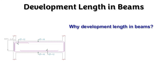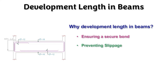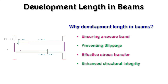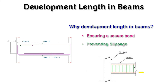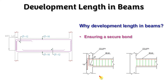Now we know what development length is. Let's look at why we need to provide it. It ensures a secure bond and prevents slippage, provides effective stress transfer, and enhances structural integrity. If we don't provide the development length, when load is applied on the beam it tends to pull the bar, and the reinforcement can simply slip out of the concrete before the concrete reaches its full capacity, leading to a sudden or catastrophic failure of the beam.